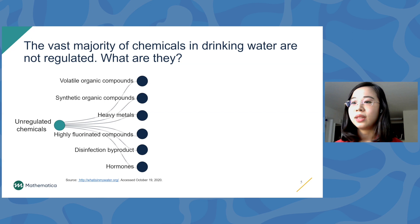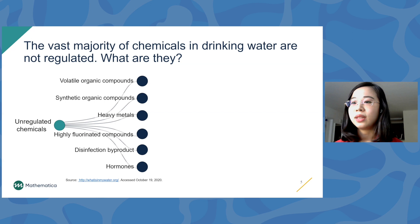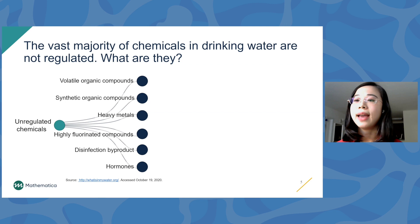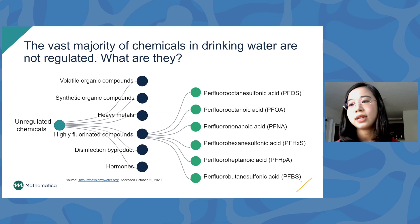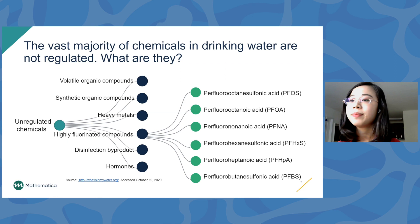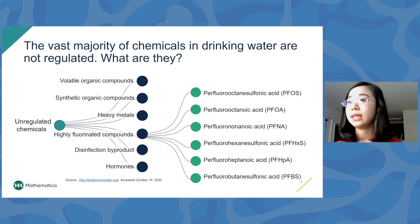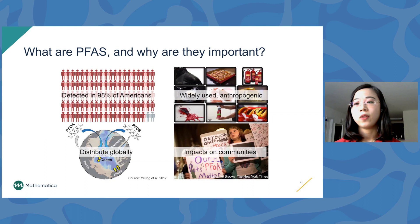Unregulated chemicals can be classified into several broad categories. Today we'll be focusing on one class called highly fluorinated compounds, also known by their more formal name: poly- and perfluoroalkyl substances, or PFAS. This family has over 4,000 anthropogenic chemicals. If you're interested in learning more, I encourage you to visit whatisinmywater.org, an interactive data visualization platform I put together with two other collaborators. For the rest of the talk, I will be focusing on PFAS.